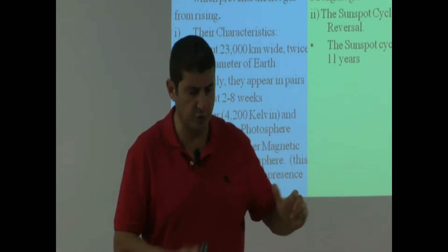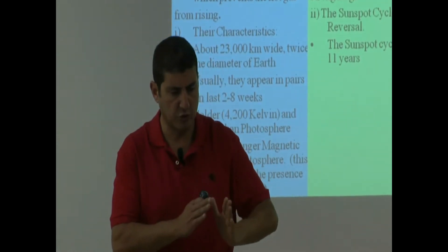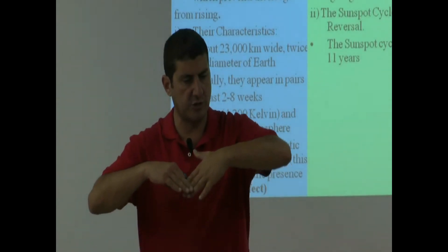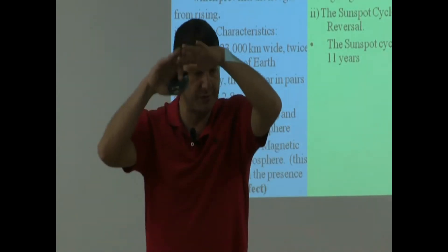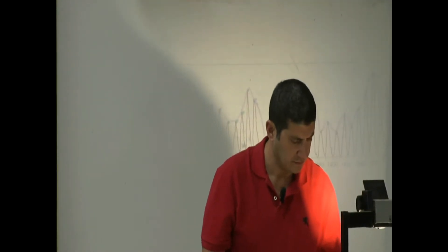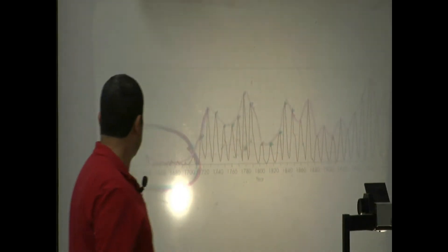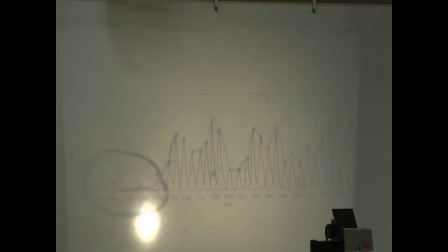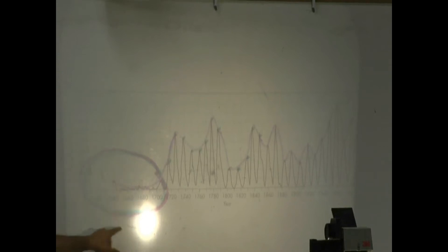When we've observed sunspots, we've noticed that throughout the years, the sunspot cycle goes up and then down, up and then down. In the 1600s, when we first started observing, there weren't that many sunspots — I'll talk about that in a few minutes, why that is and what happened.